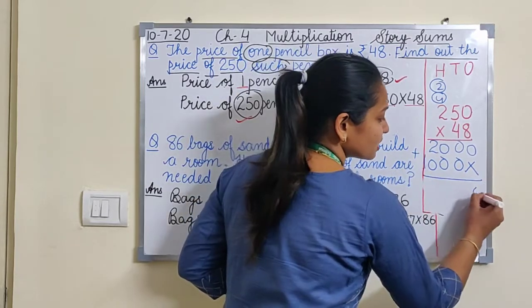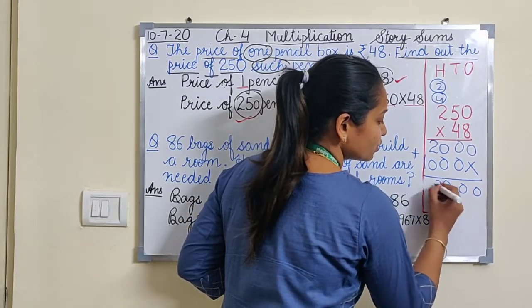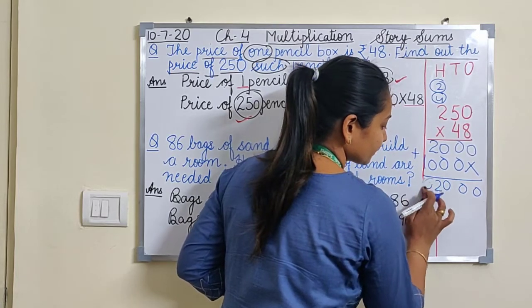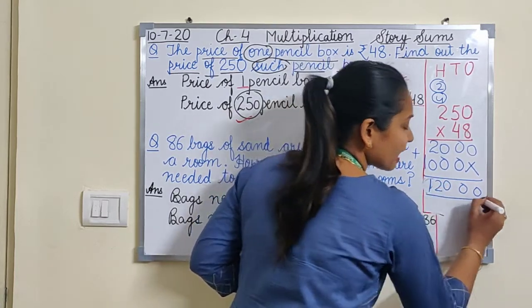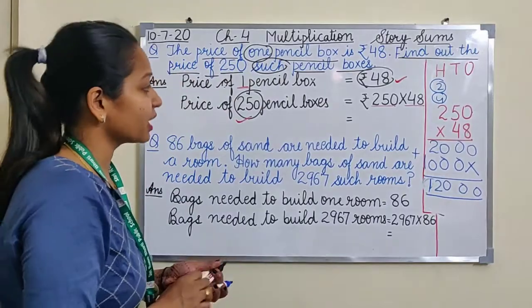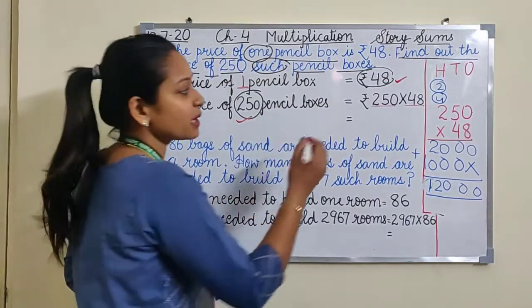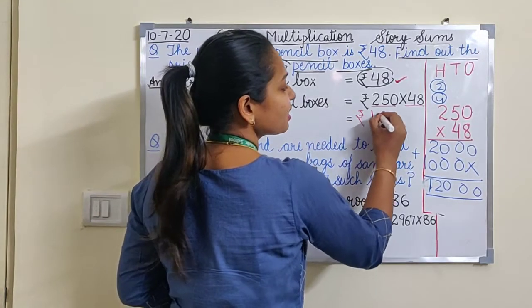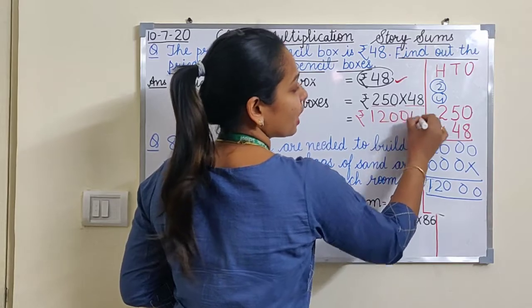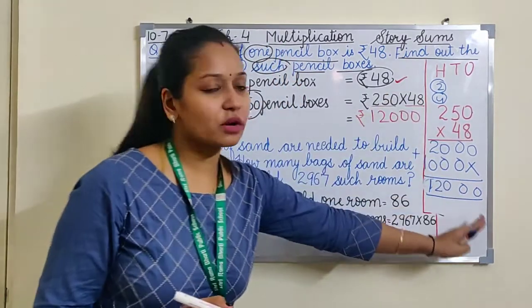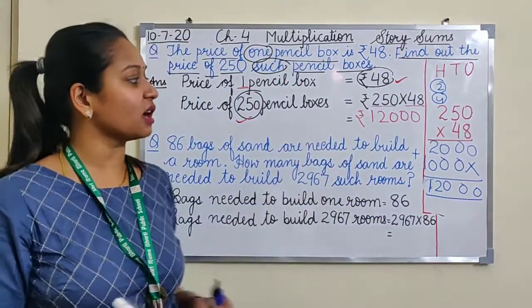Now add these: 0, 0, 0, 2, 0, 1. So my answer here is 12,000. So what is the cost of 250 pencil boxes? It's rupees 12,000. So simply we can solve and write the answer.